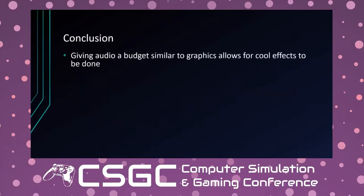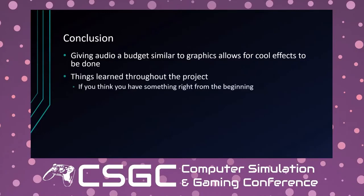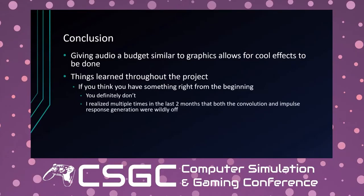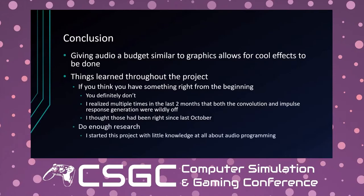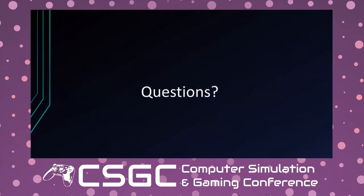Conclusion: giving audio a budget similar to graphics allows for really cool effects like reverb. Lessons learned: if you think you have something right from the beginning, you most definitely don't — in the last two months I realized multiple times that both my convolution and impulse response generation were wildly off, and I'd thought they were correct since October. Also: do enough research. I started with very little knowledge of audio programming since Guildhall doesn't focus on it, which made things very difficult early on.